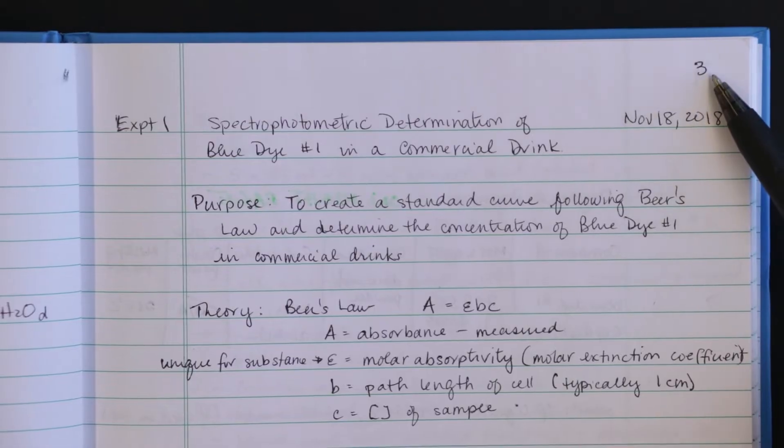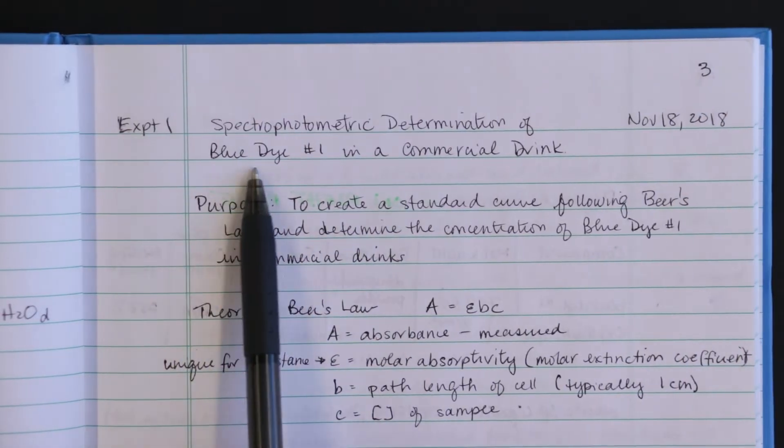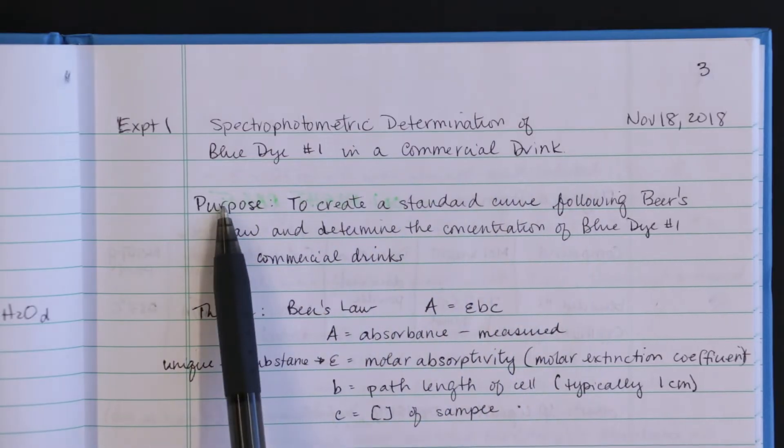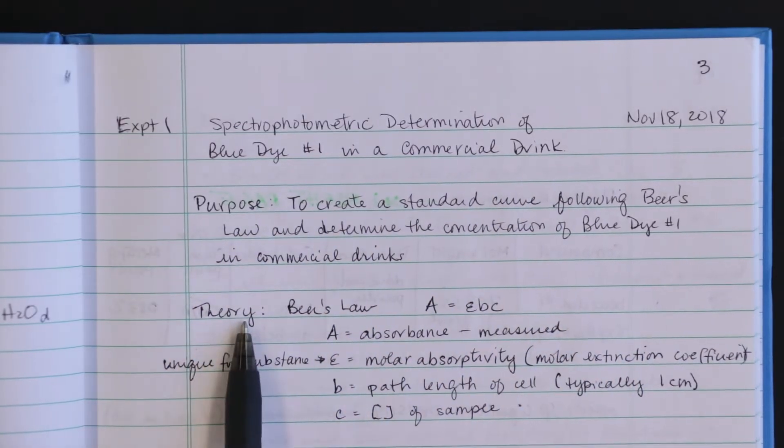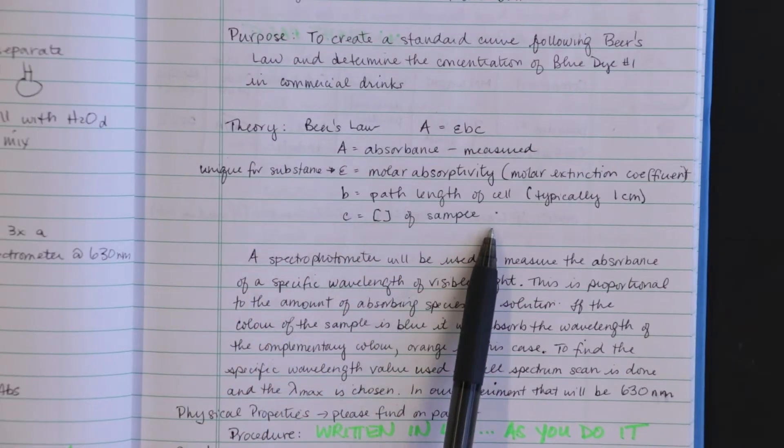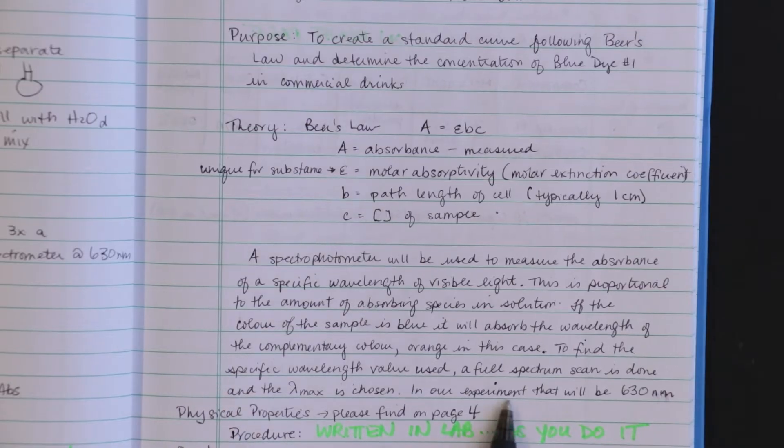On the right-hand side I have my page number, date, full title, and purpose. This is what am I trying to do. A bit of background theory is important as well. In this case I am using Beer's law and using a spectrophotometer. This section does not have to be long.